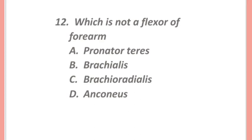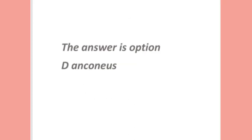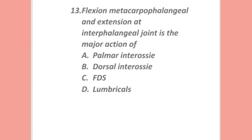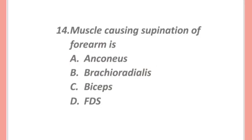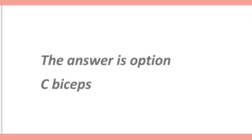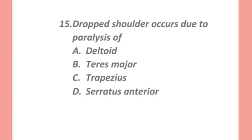Which is not a flexor of the forearm: pronator teres, brachialis, brachioradialis, or anconeus? The answer is option D — anconeus. Flexion at the metacarpophalangeal joint and extension at the interphalangeal joint is the major action of: palmar interossei, dorsal interossei, FDS, or lumbricals? The answer is option D — lumbricals.